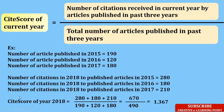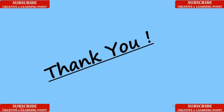Similarly, to calculate the cite score for 2018, I will use data for the past three years, as you can see. Substituting those values, I get the cite score of that particular journal for 2018 as 1.367. For more informative videos, please subscribe.